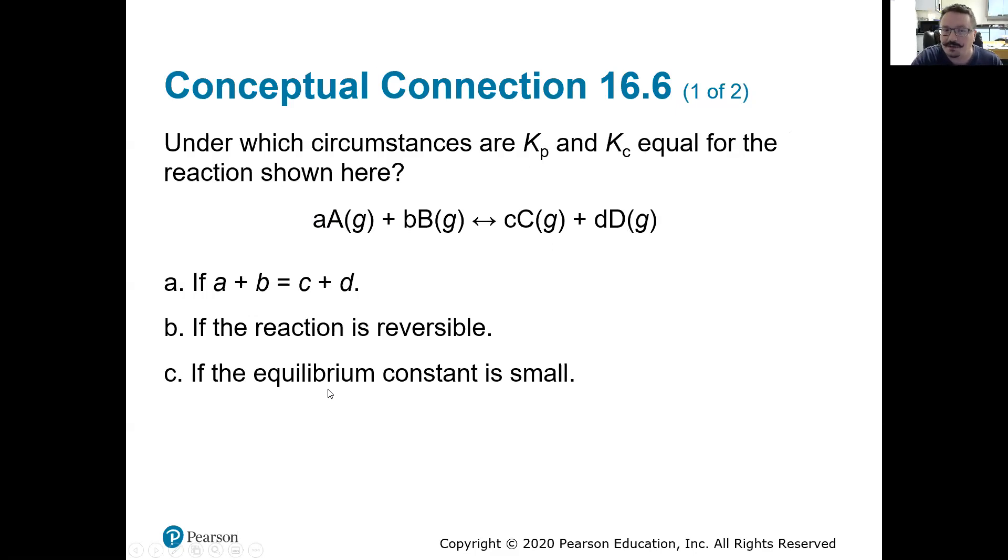Only if the reaction is reversible or only if the equilibrium constant is small. Well, we need delta N to be equal to zero. So that means the moles of gas on the left hand side has to be equal to the moles of gas on the right hand side. Let's look at this in a little bit more detail. Let's jump into the whiteboard here. I'm just going to steal the example problem from the book for right now. So we're going to need to be given a specific gas reaction and know what that is.